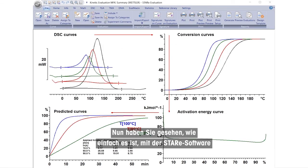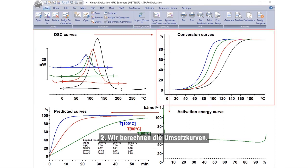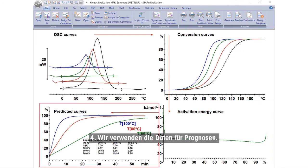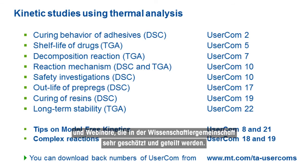You have seen how easy it is to predict reaction kinetics using Mettler Toledo's STAR-E software. The diagram is a summary of the four steps. One, we define the reaction peaks and draw baselines for the integration. Two, we calculate the conversion curves. Three, the conversion-dependent activation energy is calculated from the conversion curves using MFK. And four, we use the data to make predictions. For more information on the topic of kinetics, we recommend you to refer to our User.com articles and webinars, which are highly appreciated and shared among the scientific community.